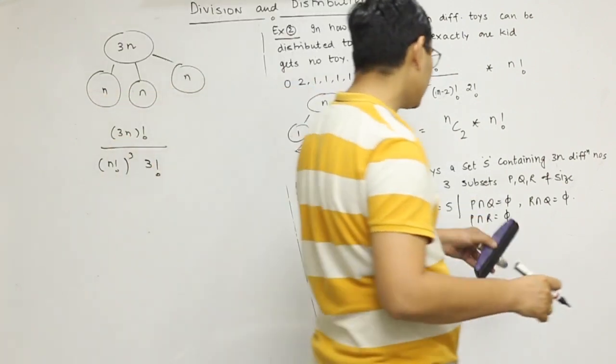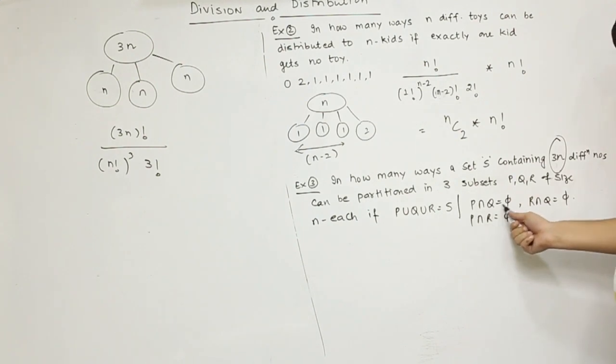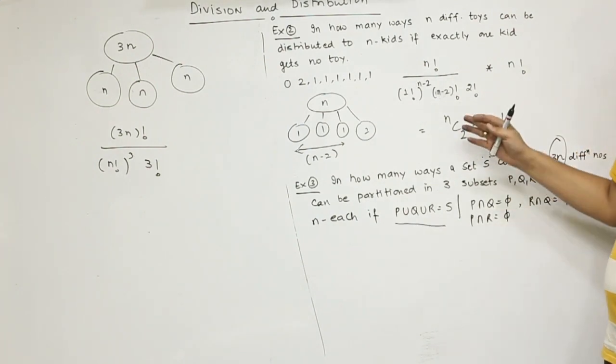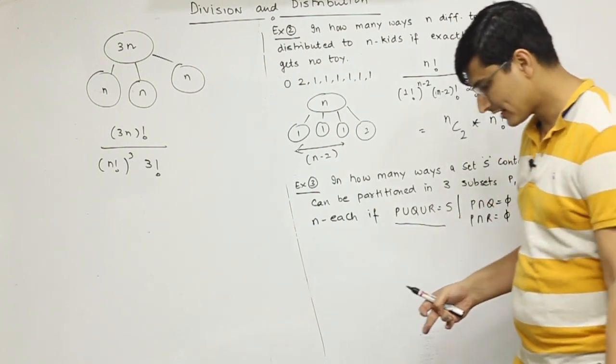You're dividing 3n things into 3 subsets whose intersection is empty and union is the sample space, meaning all elements are covered and they have nothing in common. So that is as good as distributing or dividing 3n things into 3 groups of size n each.